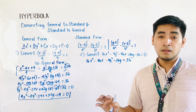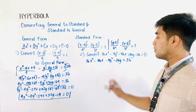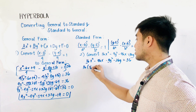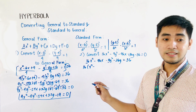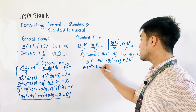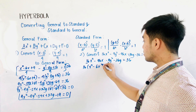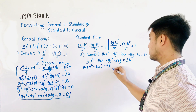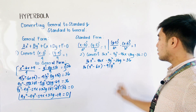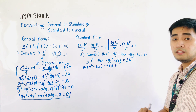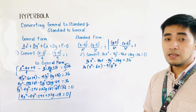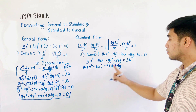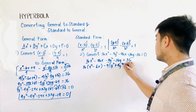Next, factor out the coefficients of x² and y². Factor 16 from the x-terms: 16(x² − 6x). Factor −9 from the y-terms: −9(y² + 4y), since −36y ÷ −9 = +4y. This gives 16(x² − 6x) − 9(y² + 4y) = 36.